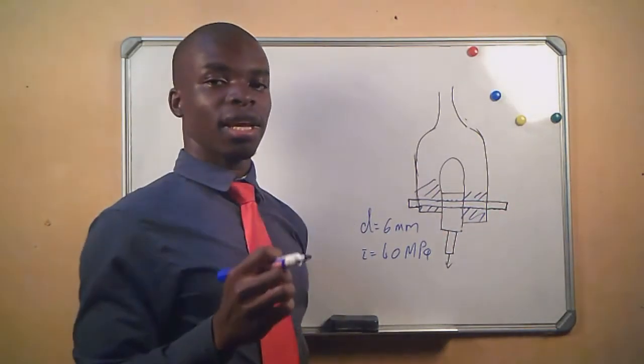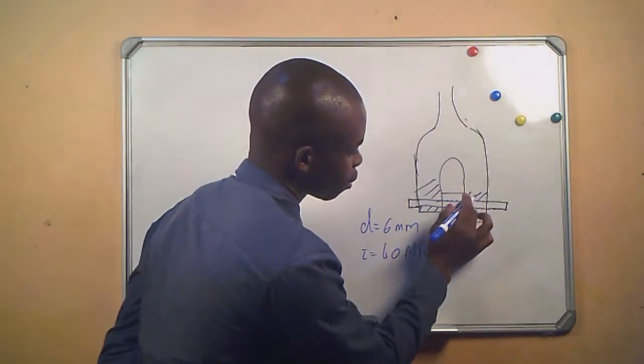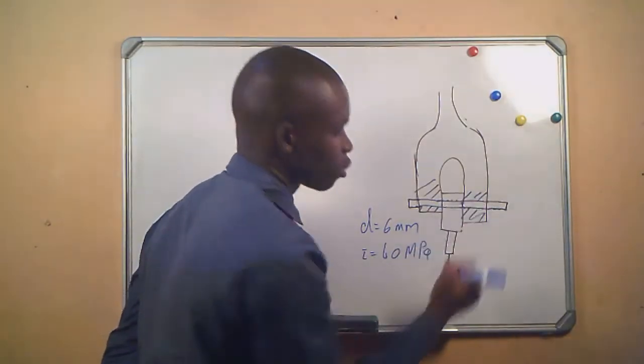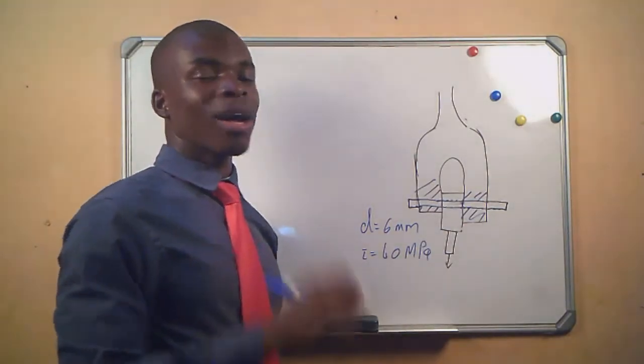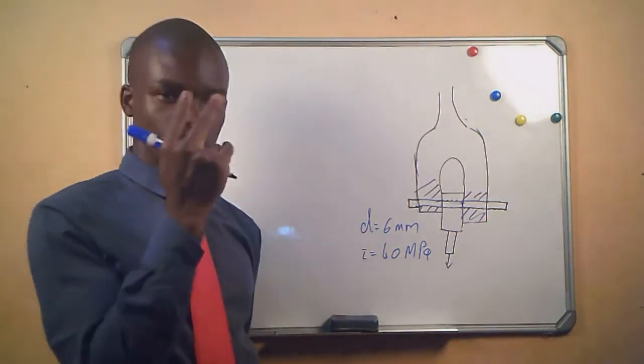If this pin will shear, it will shear in this position and in this position. What does that tell us? This tells us that we are dealing with two areas.